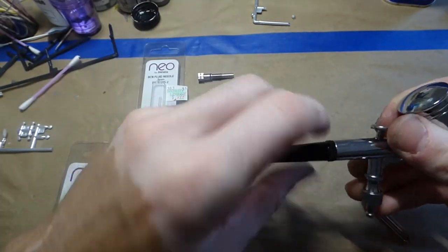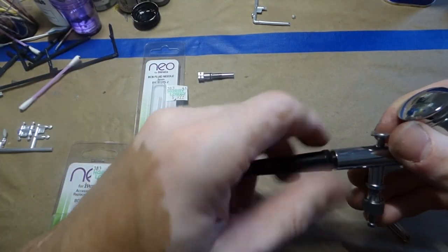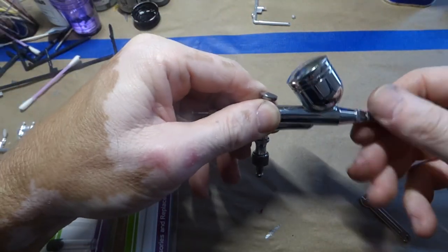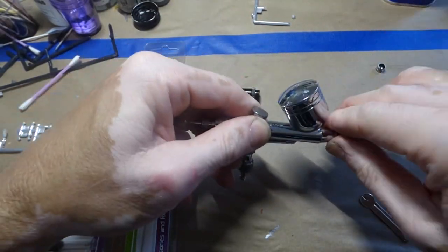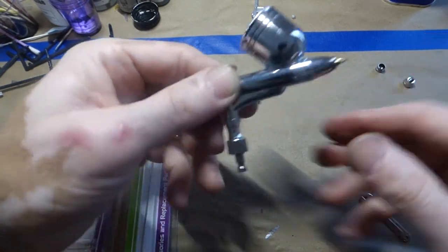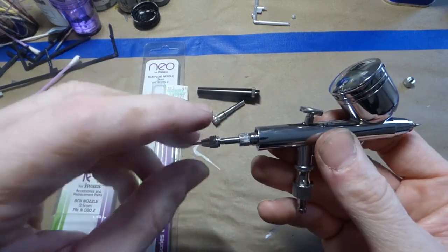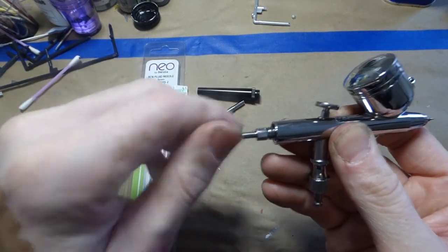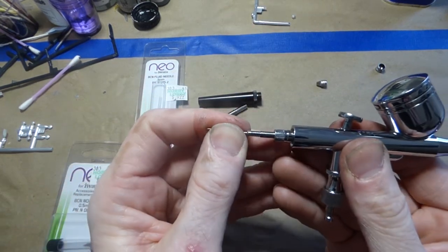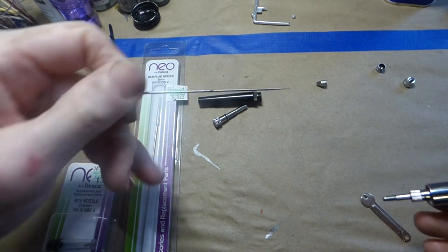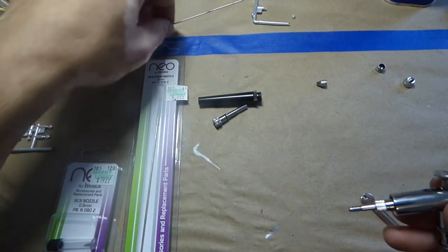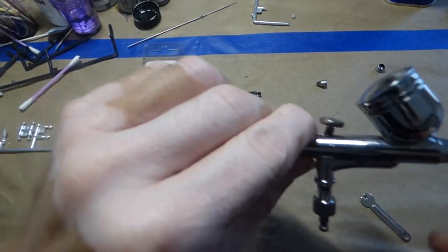I'm going to take the airbrush apart. This is just a typical Chinese no-name airbrush. Pull out the needle - it's a little dirty, still got some stain or residue on it. The airbrush just would not push it through.